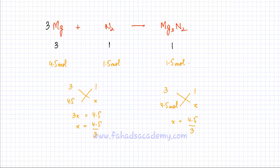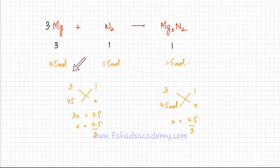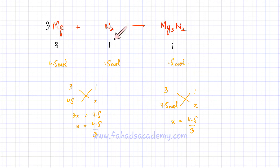So you can use ratios to figure out the moles. I was given 4.5 moles of magnesium, and I have figured out that 4.5 moles of magnesium are going to react with 1.5 moles of nitrogen according to the ratio 3:1, and it's going to produce 1.5 moles of magnesium nitride because it also had a ratio of 1.